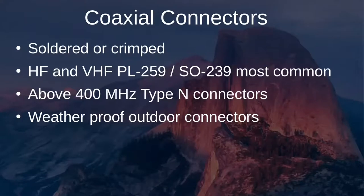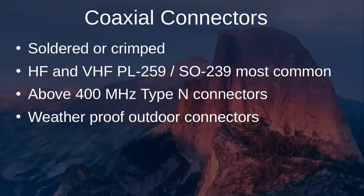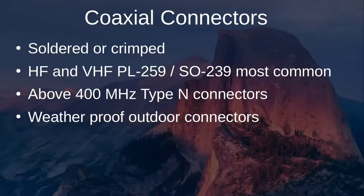Coaxial connectors are something every ham will need to become familiar with. You need a connector to connect the coaxial cable to your antenna or radio — these connectors can be soldered or crimped. The most common for HF and VHF frequencies are the PL259 and SO239. Above 400 MHz, there is a specialized N-type connector. If connectors are installed outdoors, they must be protected from the weather; otherwise, water can get inside, potentially causing a short circuit. A specialized tape can be used to protect outdoor connectors from moisture.